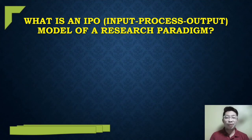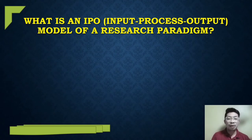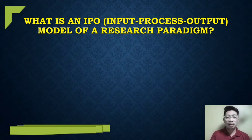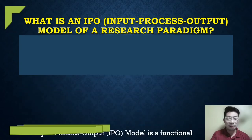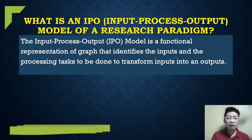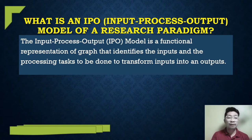We had already discussed the IBDV, or the independent variable and dependent variable. At this time, we'll be discussing the IPO, or the input-process-output. What is an IPO or input-process-output model of a research paradigm? The input-process-output model is a functional representation or graph that identifies the inputs and the processing tasks to be done to transform inputs into an output.